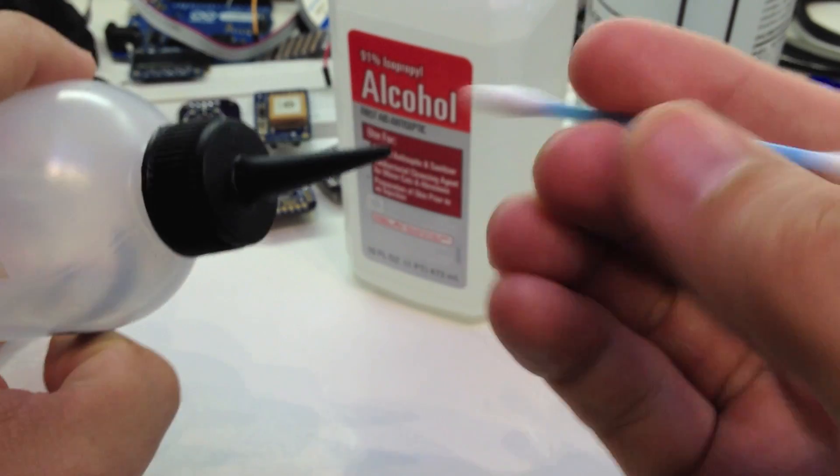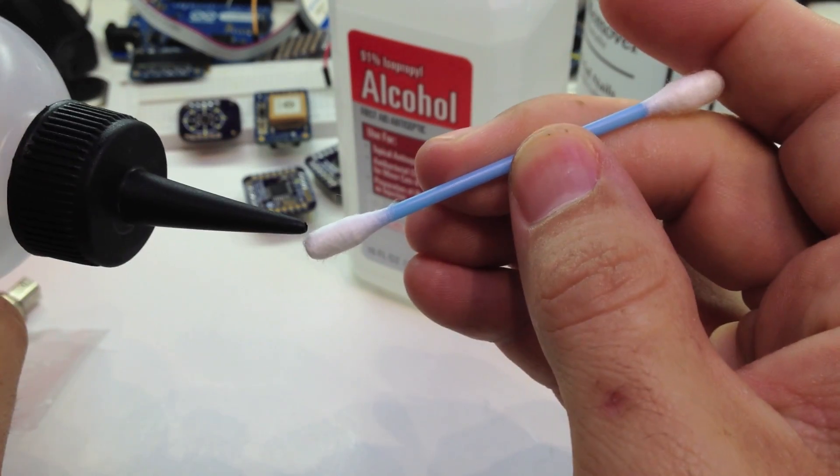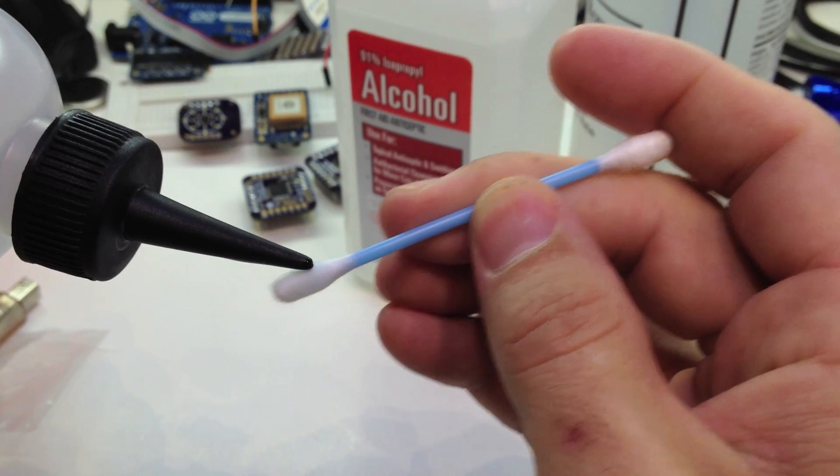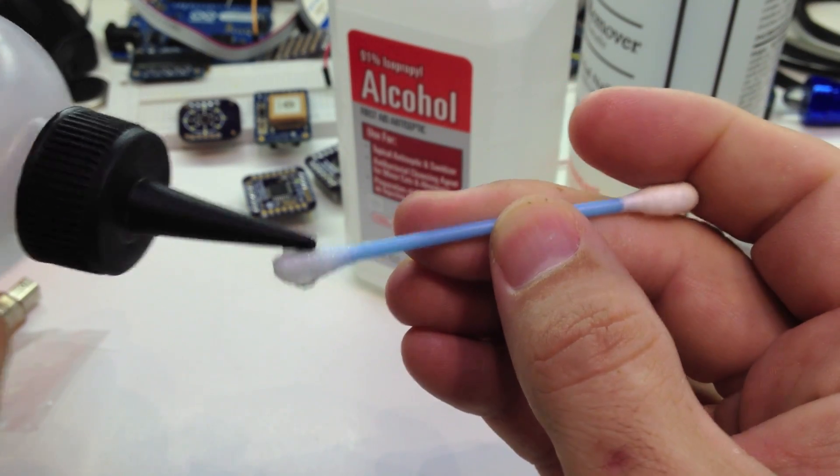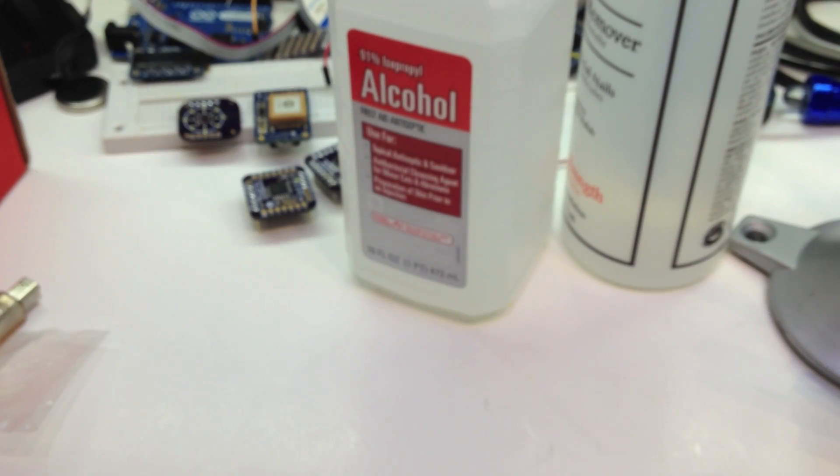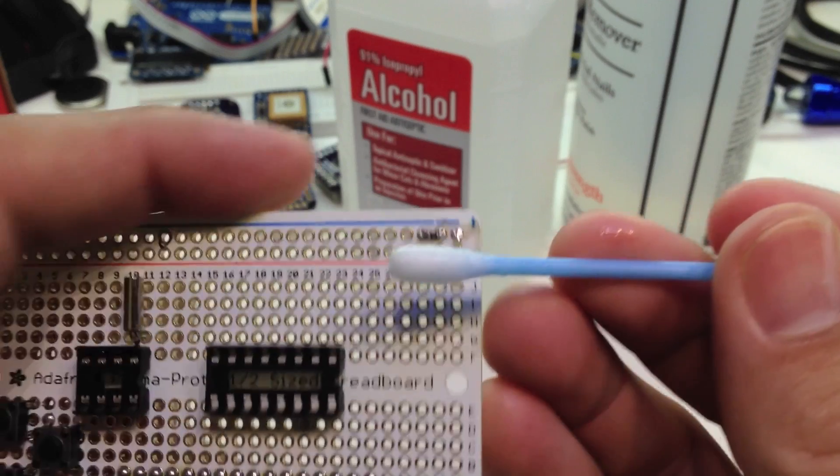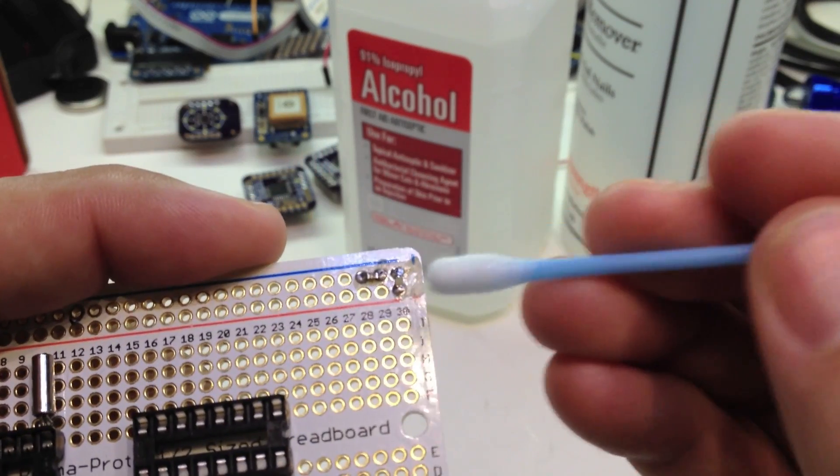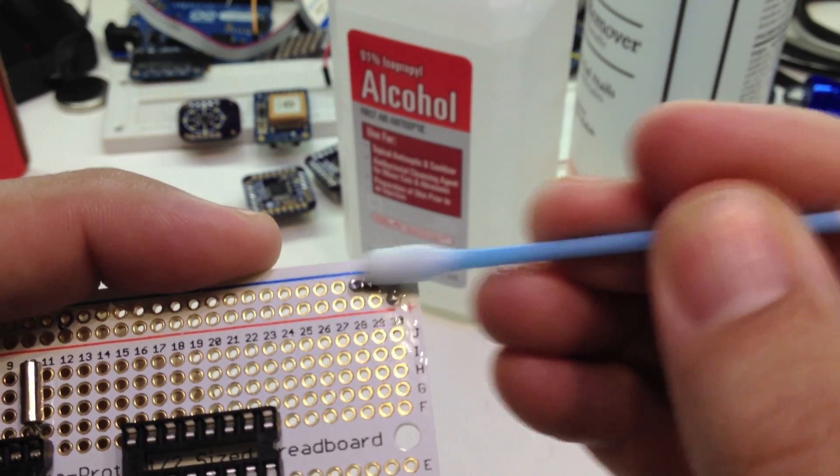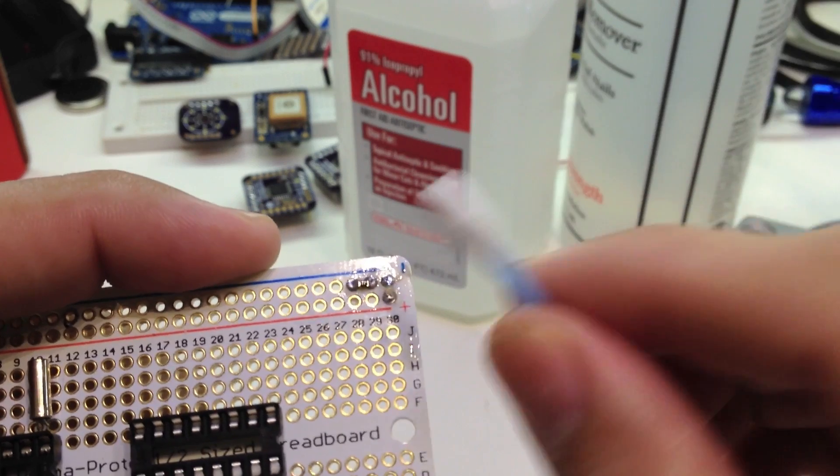So you take some Q-tips, and you get your Q-tip damp, but also pay attention to what you're doing and not the camera. And then if you just rub this guy on here, you can see that it comes off really, really easy. And it cleans up things really, really nice.